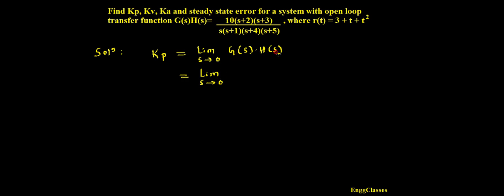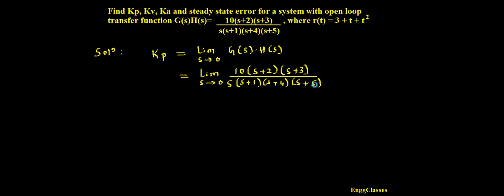Substituting G(s)H(s): we have 10(s+2)(s+3) in the numerator, divided by s(s+1)(s+4)(s+5) in the denominator. If I put s equal to 0, I get 1 divided by 0, which turns out to be infinity. So Kp equals infinity.